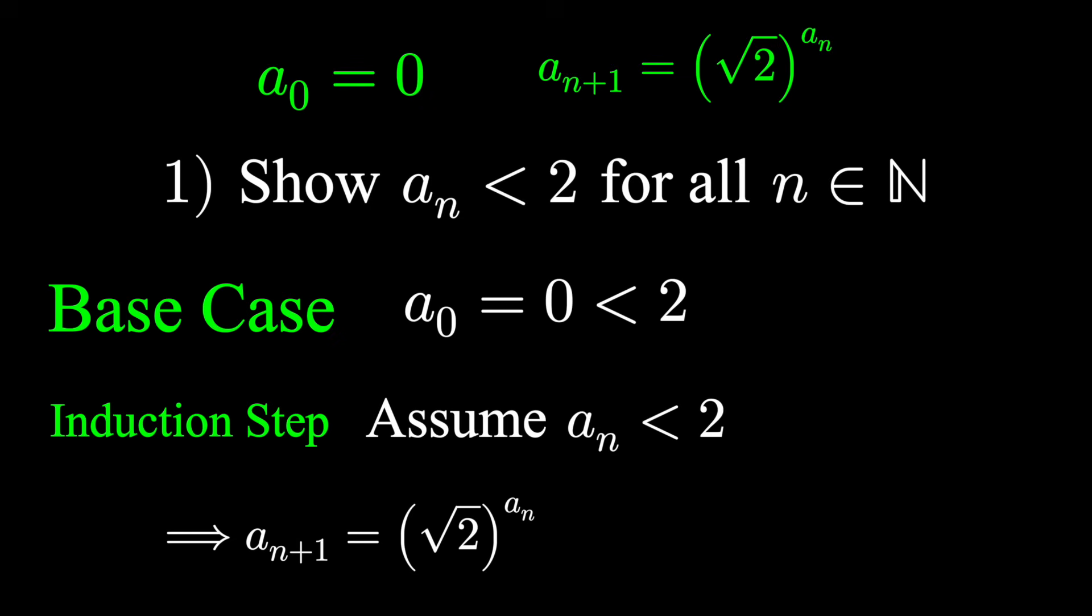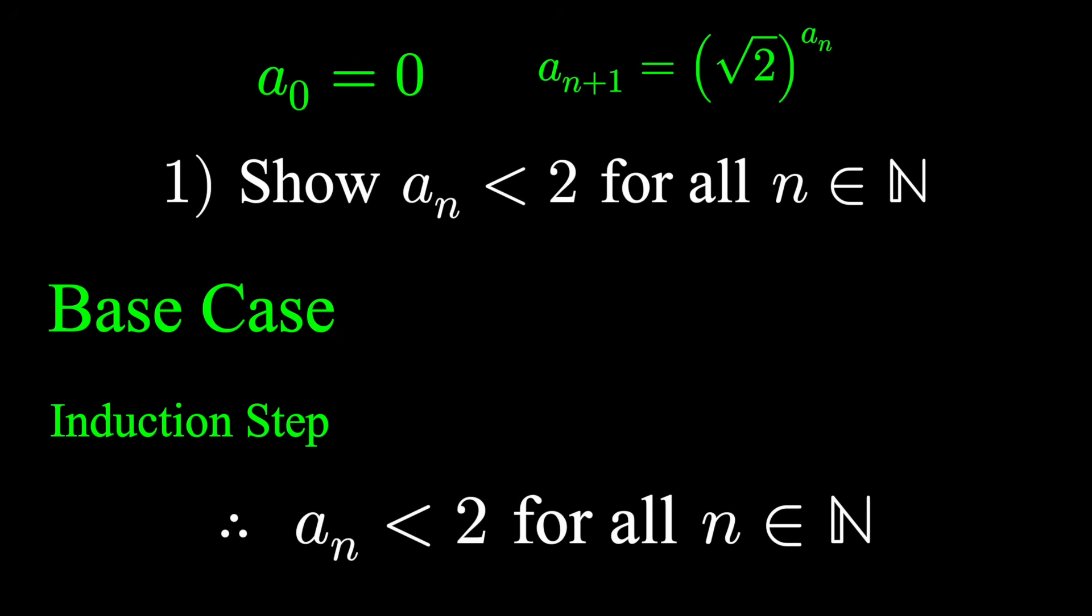And we're assuming a sub n is less than 2, we can just replace that with 2 in the exponent, using a less than symbol. And it just so happens, square root of 2 squared is 2. Thus, a sub n plus 1 is less than 2. If we knock down the nth domino, the n plus 1 domino also falls. By induction, our sequence is less than 2 for all n.